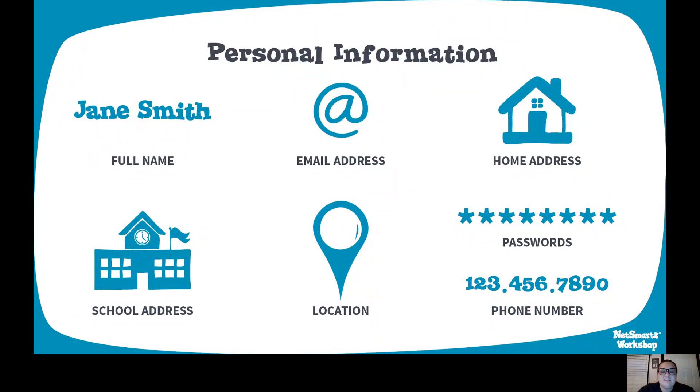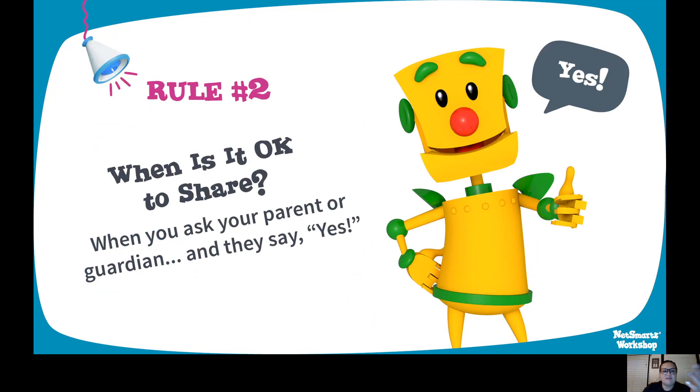So we just talked about inappropriate content, but there's also other types of information online — maybe even information about yourself — and that's called personal information. Personal information can include things like your full name, email address, home address, school address, dropping a pin or sharing your location, and your phone number or your parent's phone number. These things are personal. I'm not talking about sharing these things within your school network — I'm talking about using them in public forums.